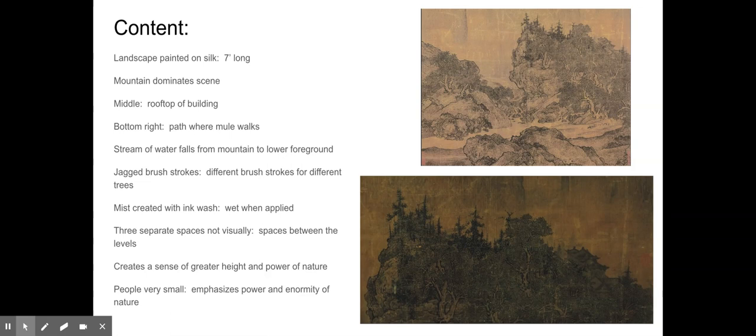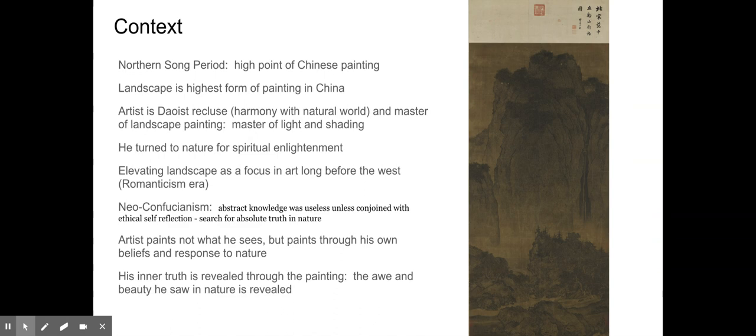By creating that space between sections, you are emphasizing depth and great height. With the mountains dominating the landscape scene, it definitely showcases the power and the sublimity of nature, because the people are so small. About three quarters of the painting is the mountain. You can see the stream coming down on the right, then a misty space, then the second section with trees, hills, the temple, the path where mules and people walk, and then rocks in the foreground.